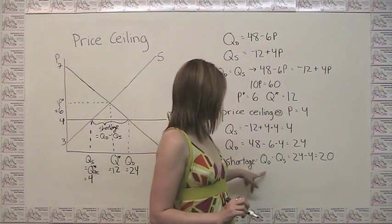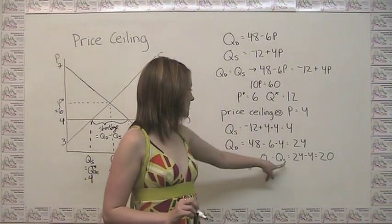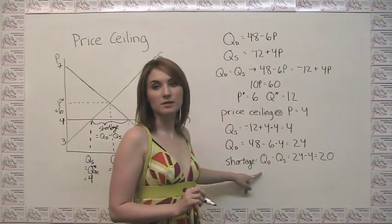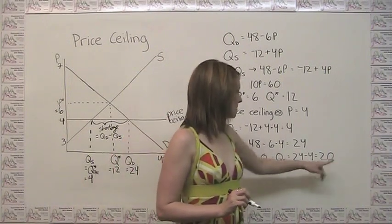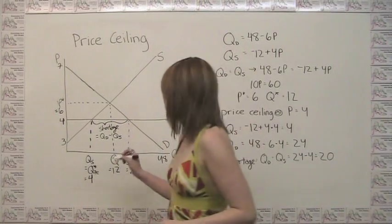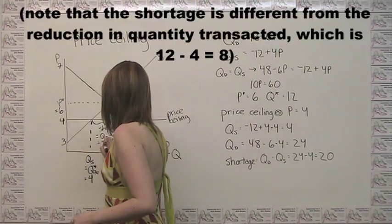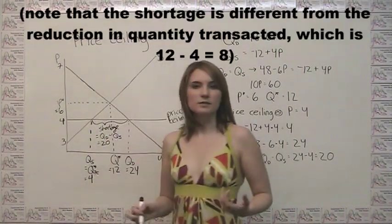And the shortage is the difference between those. In this case, quantity demanded minus quantity supplied, because demand is the bigger one. 24 minus 4, which is 20. So this amount of the shortage, quantitatively speaking, is 20.